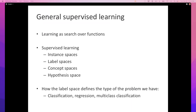The label space contains all possible labels the model can produce. If the label space has two things, we call it binary classification — true/false, minus one/one, etc. If it has a finite number more than two, it's multi-class classification. If the label space is all real numbers, it's regression. There are also other label spaces, like structured prediction, where your model must produce a complex object like a labeled graph.